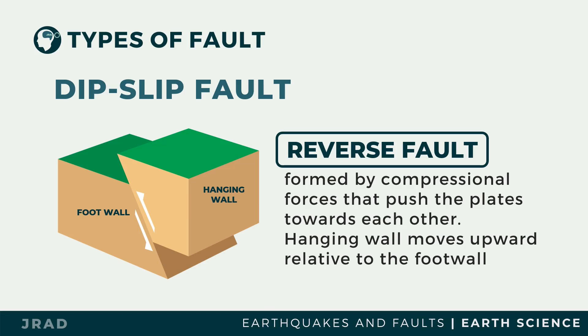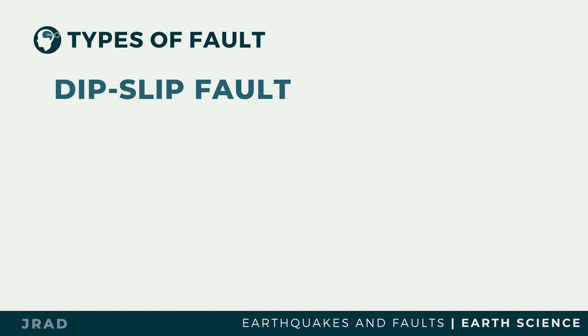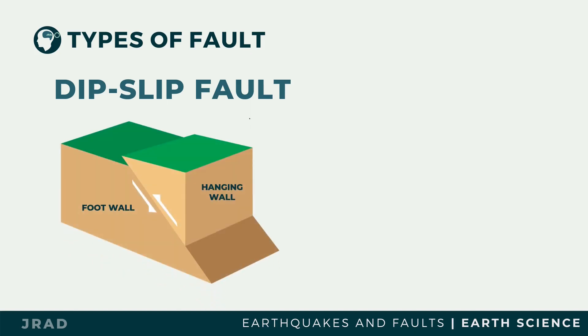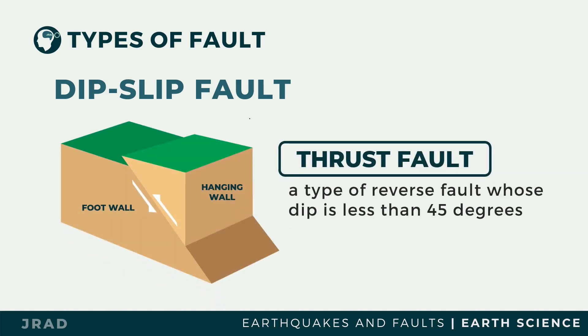It is therefore called the reverse fault. In a reverse fault, the hanging wall moves upward relative to the foot wall. A thrust fault is a type of reverse fault whose dip is less than 45 degrees.